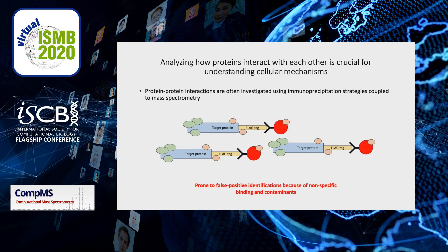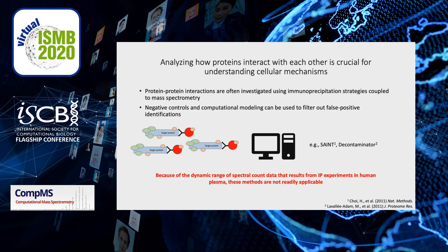Typically, immunoprecipitation strategies coupled to mass spectrometry are used to investigate protein-protein interactions. However, they succumb to many false positive identifications due to nonspecific binding and contamination. While these false positives can normally be filtered out using a combination of negative controls and computational modeling,